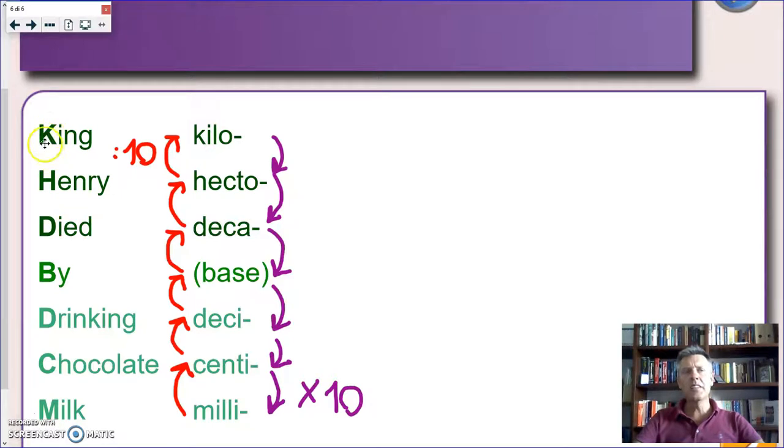And, as you can see, the initial of each word corresponds to one of, I would say, the main prefixes. So, from kilo all the way down to milli. So, we're skipping mega and giga. And, what is important? So, you see, K stands for kilo, H for hecto, D for deca, B for base, so no prefix. D for deci, C for centi, and M for milli.